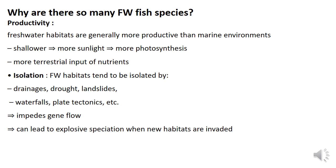Why are there so many freshwater fish species? Freshwater habitats are generally more productive than marine environments because they contain shallow water. Shallow water flows at lower velocity and receives more sunlight — sunlight can penetrate more easily. Aquatic plants need to grow in shallow water where sunlight can reach them, and more terrestrial input of nutrients is available, which is why freshwater systems are more productive.